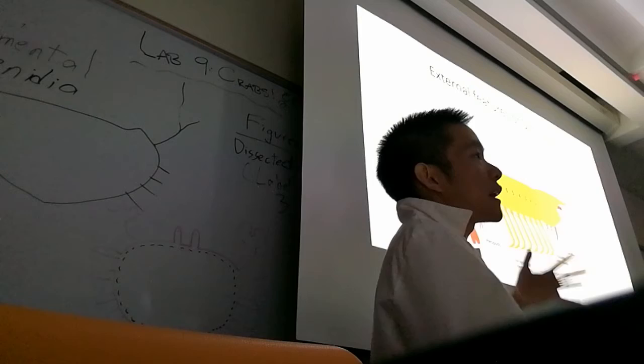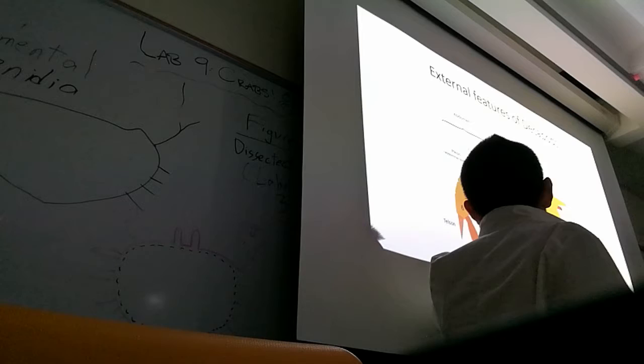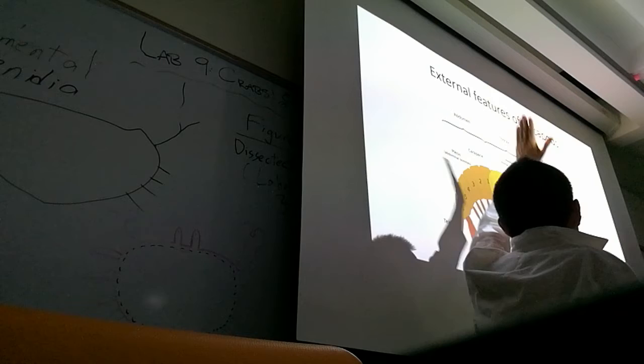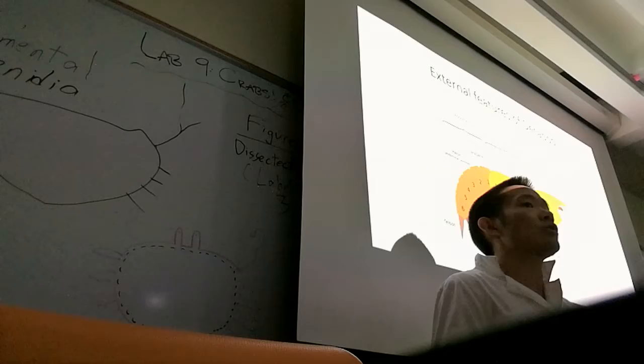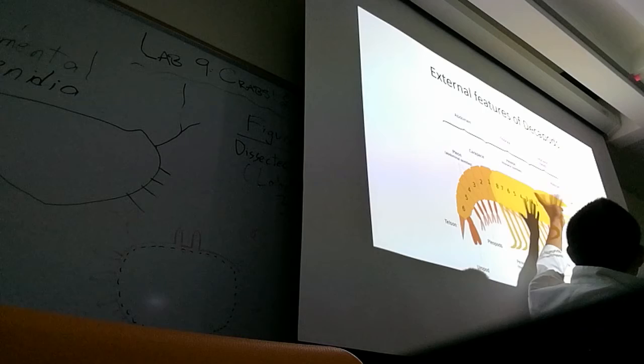You don't have to memorize everything on this figure, like the pleopods and the telsons, but the main things to take away are the body regions. Arthropods are generally split into three body regions: the abdomen, the thorax, and the head or cephalon. Things like crabs and spiders have the head and thorax fused to create what's called the cephalothorax.